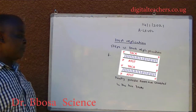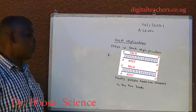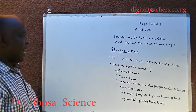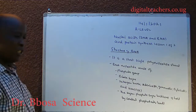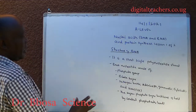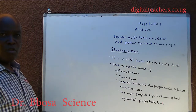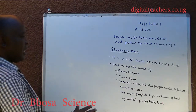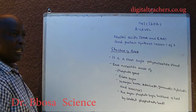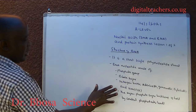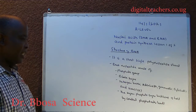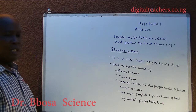Step 5: the last step of DNA replication is termination, which occurs when the DNA polymerases reach the ends of the strands. Step 6: finally, possible errors are corrected in the two DNAs produced. The structure of RNA: it is a short single polynucleotide strand. An RNA nucleotide is made of a phosphate group, ribose sugar, and nitrogen bases — adenine, guanine, cytosine, and uracil. The sugar-phosphate backbone is held by covalent phosphodiester bonds.